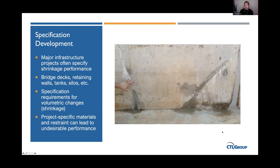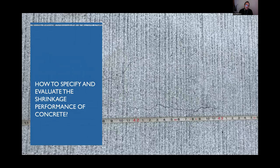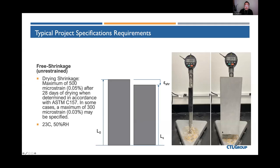I'm now showing an image of a classic wall-over-slab situation with restrained shrinkage cracking in both a vertical direction and a diagonal direction toward the end of the wall. This raises the question of how we specify and evaluate shrinkage performance. Crack-free concrete is very difficult to guarantee, and addressing cracking is often placed squarely on the contractor's shoulders, when in some cases the design could have been better.